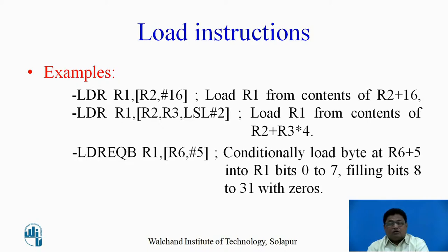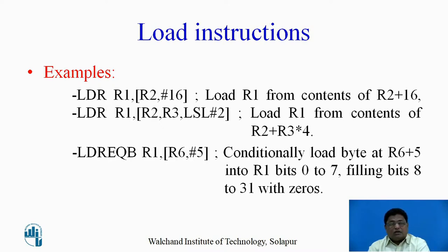The next example is: LDR R1, [R2, R3, LSL #2]. This instruction loads the R1 register. The address is calculated as: the contents of R3 are multiplied by 4 due to the LSL field, and then the value of R2 is added to that product. The result is the final memory address from where the value is loaded into R1.